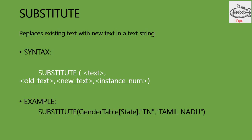SUBSTITUTE. The SUBSTITUTE DAX function replaces the existing text with new text in a text string. The syntax is SUBSTITUTE(text, old_text, new_text, number of instance). The instance number is optional — if you ignore it, it will replace all occurrences wherever the value is available in the table.